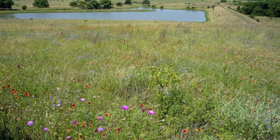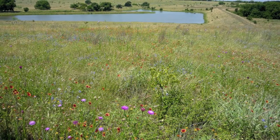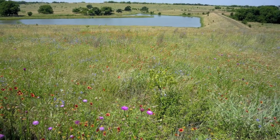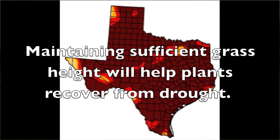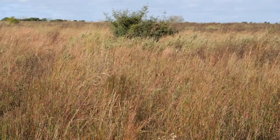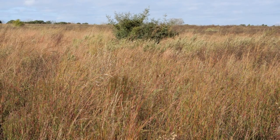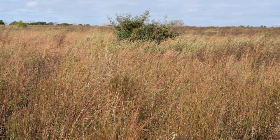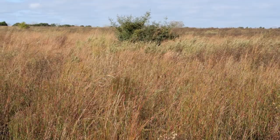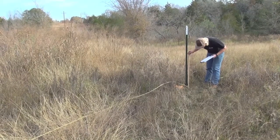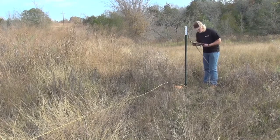Measuring grass stubble height is probably one of the more important measurements to take because of grass cover's relationship to watershed health and the long-term productivity of the land. Managing for sufficient grass stubble height will help maintain a healthy root system, increase rainfall infiltration, and reduce erosion and runoff. For tall grasses such as little bluestem, big bluestem, Indian grass, and switchgrass, maintain a 12 to 14 inch minimum. For mid grasses such as side oats grama, maintain a 6 to 8 inch minimum.